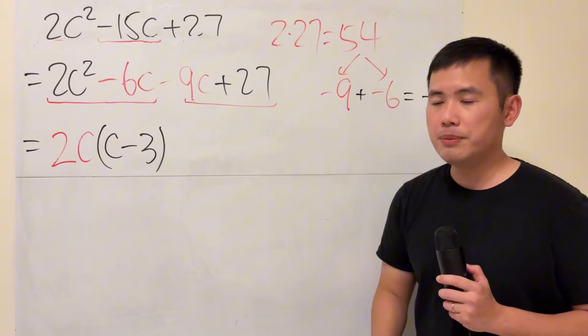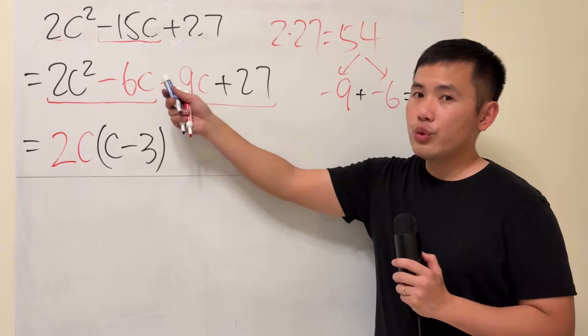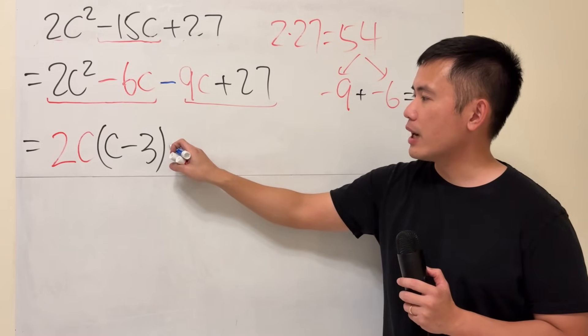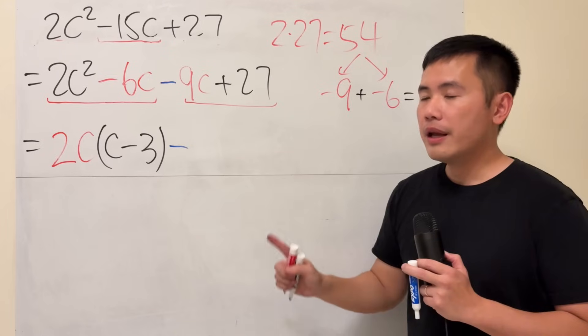Now, here's the tricky part. And I'll tell you. Whenever you are doing factor by grouping, whatever this sign is, go ahead and write it down right away.